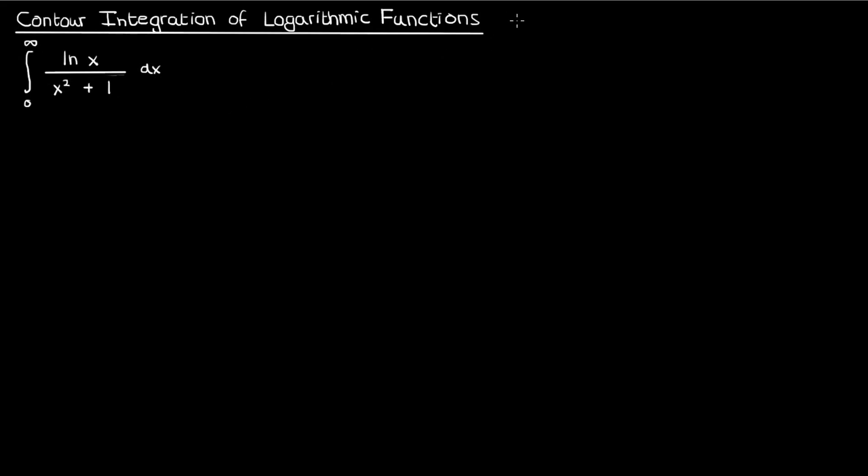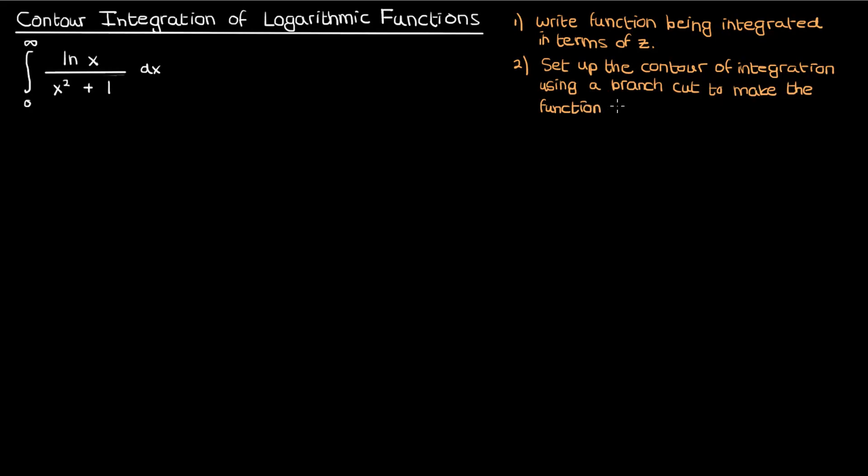There's really three basic steps behind performing an integration like this. The first is to write the function being integrated in terms of z. The second is to set up the contour of integration using a branch cut to make the natural log a single valued function as opposed to a multiple valued function. The third step is to set up the integration and apply the residue theorem.